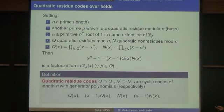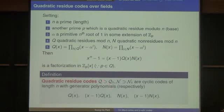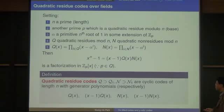Q(x) and N(x) are not necessarily irreducible. We define four quadratic residue codes: Q, Q1, N, and N1. These are cyclic codes with generator polynomials Q(x), (x-1)·Q(x), N(x), and (x-1)·N(x) respectively.